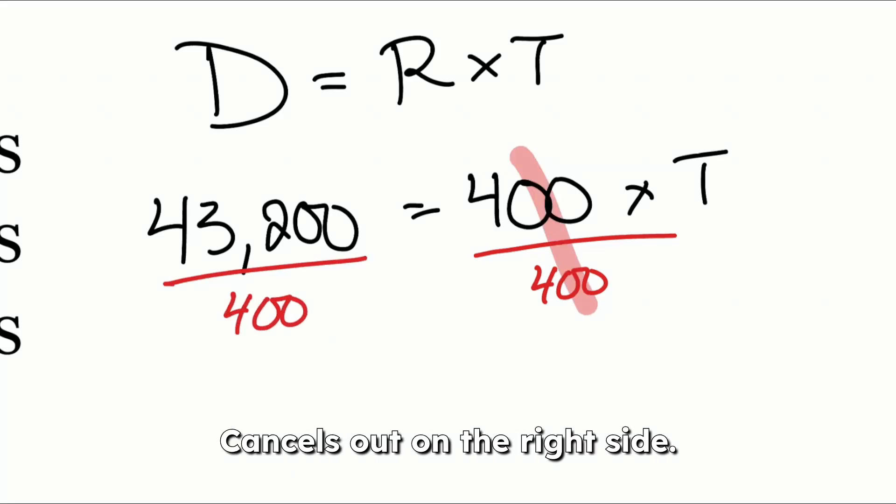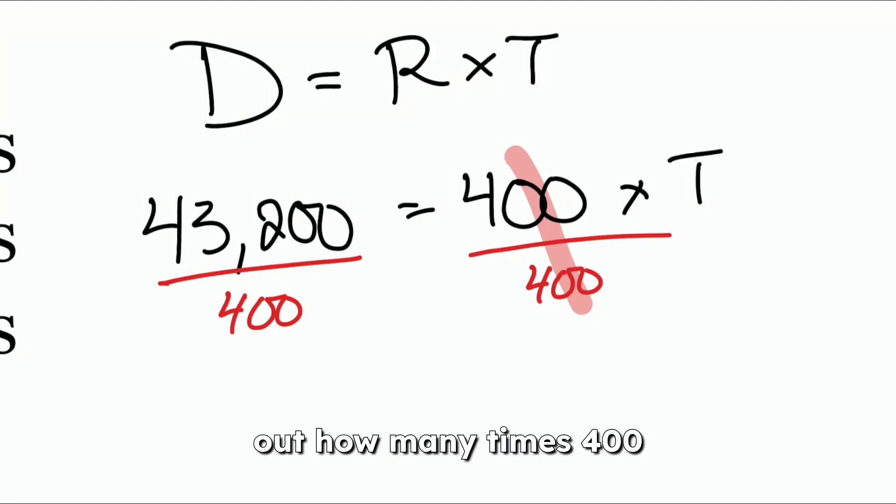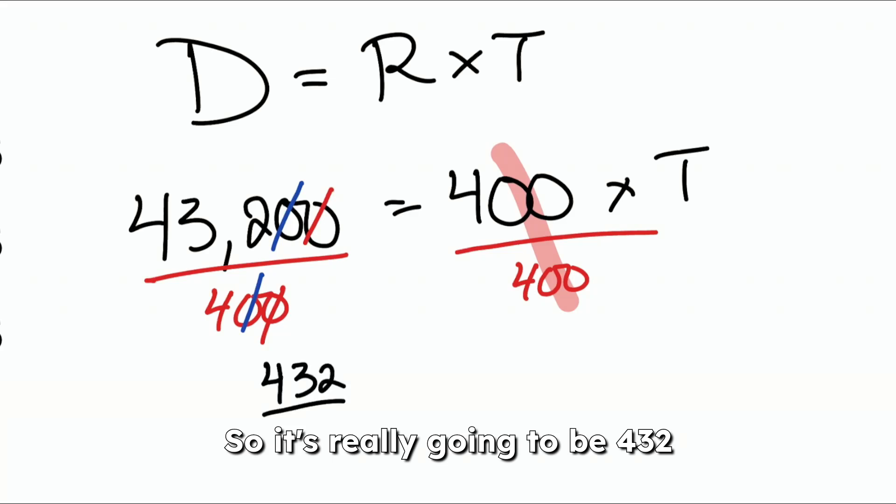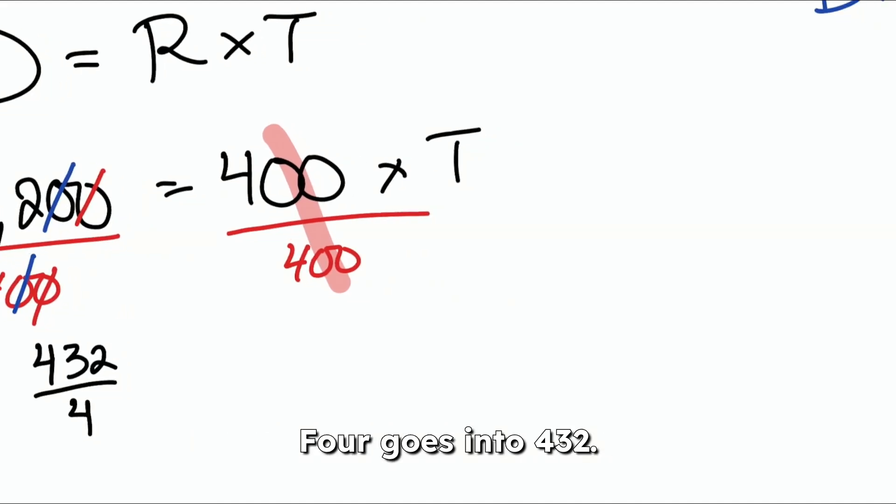Cancels out on the right side. And now we just have to figure out how many times 400 goes into 43,200, which is going to be a little easier than you might think, because we can take out those zeros as we divide. So it's really going to be 432 divided by 4. So let's do it. 4 goes into 432. How many times?